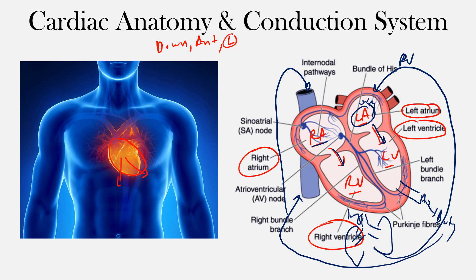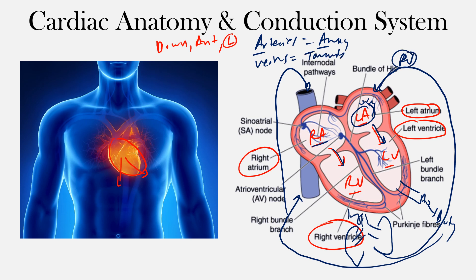After the body uses the oxygen, blood eventually comes back to the right side of the heart through the inferior vena cava and the superior vena cava, and the system continues to flow. For arteries — think of them as taking blood away from the heart, 'A and A.' Veins take blood towards the heart.